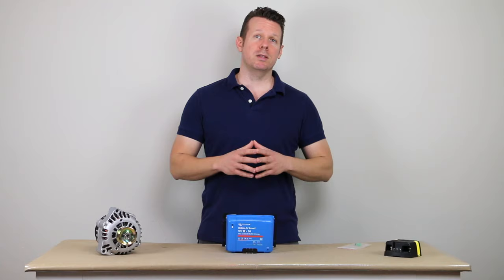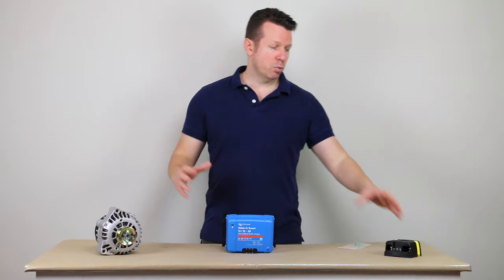Now, the first major mistake is using a relay instead of a charger in the line between your alternator or your front system and your rear battery bank.